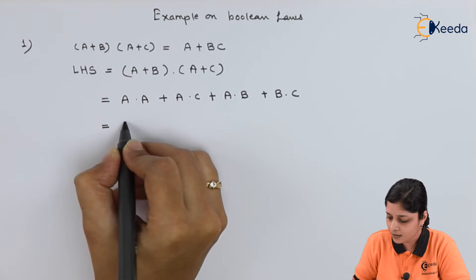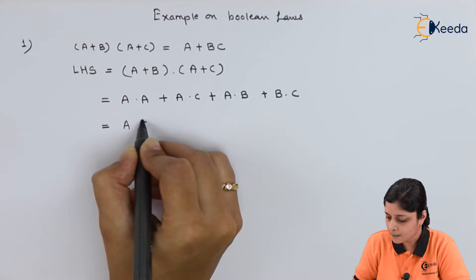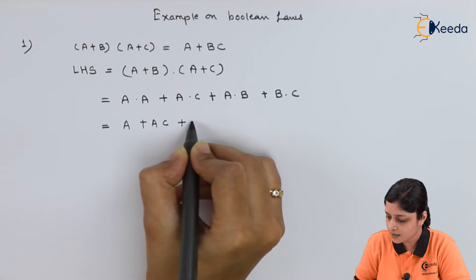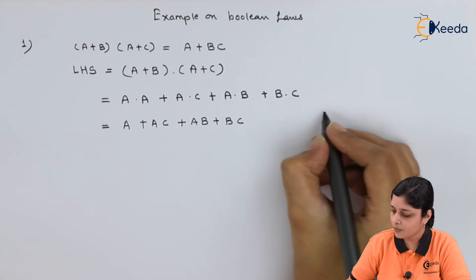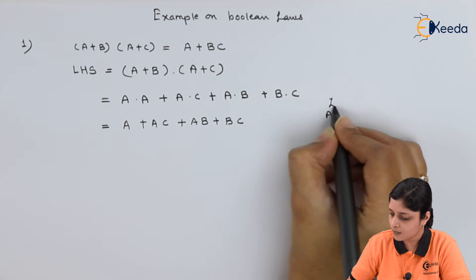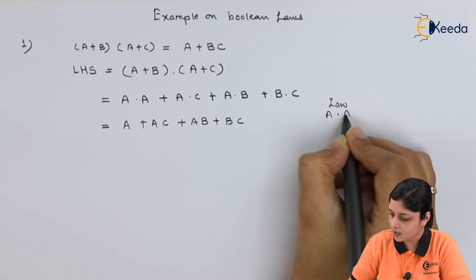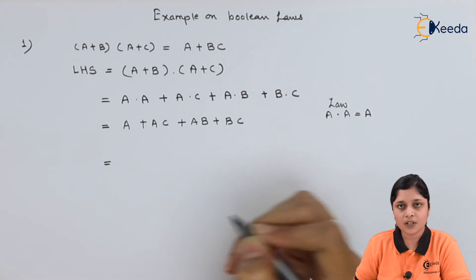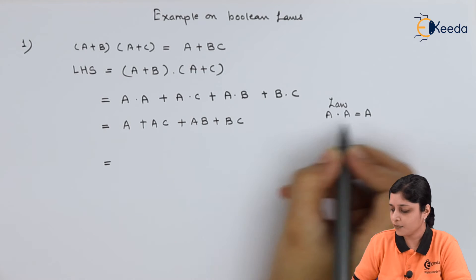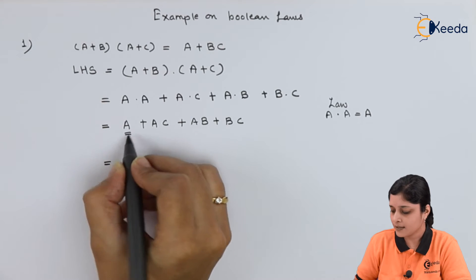Now apply the laws. A·A, you already know A + AC + AB + BC. We have applied law A·A equals to A. Write down the explanation if you have this answer.